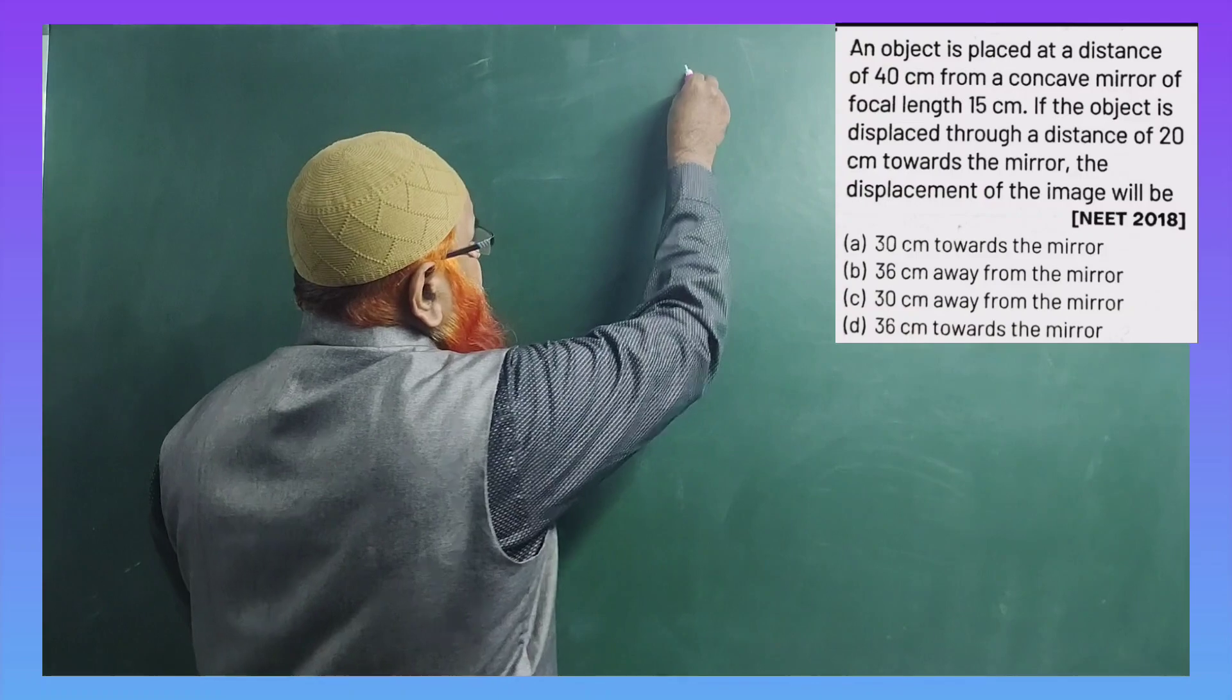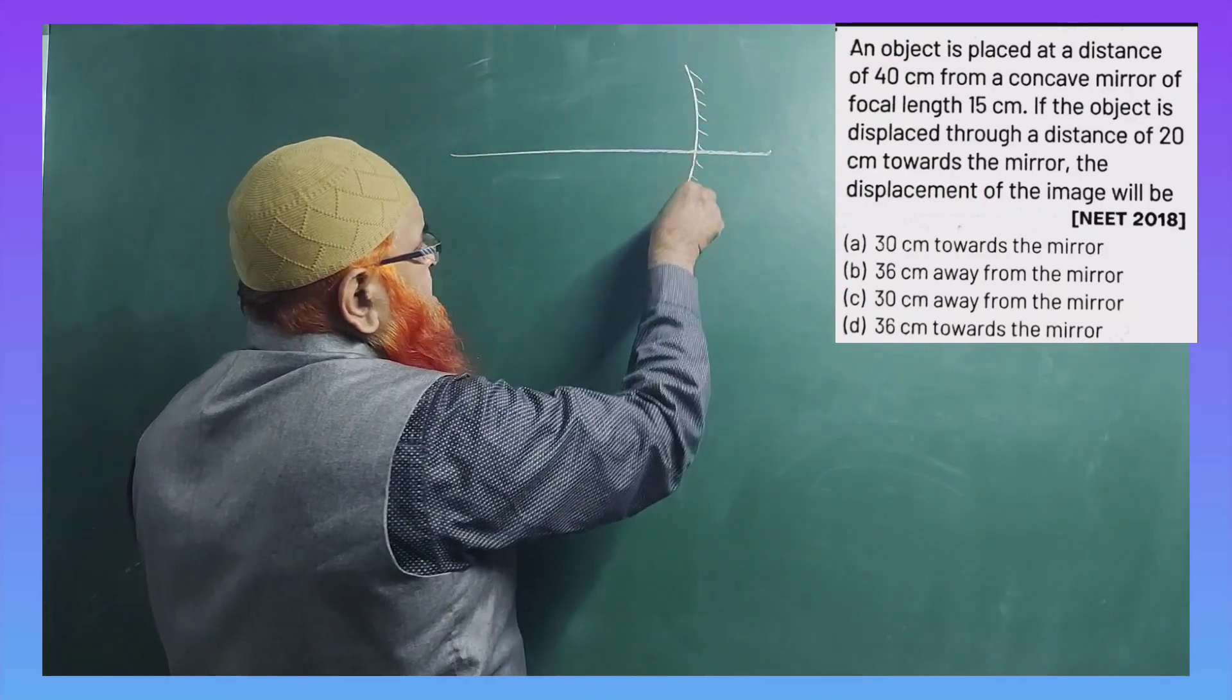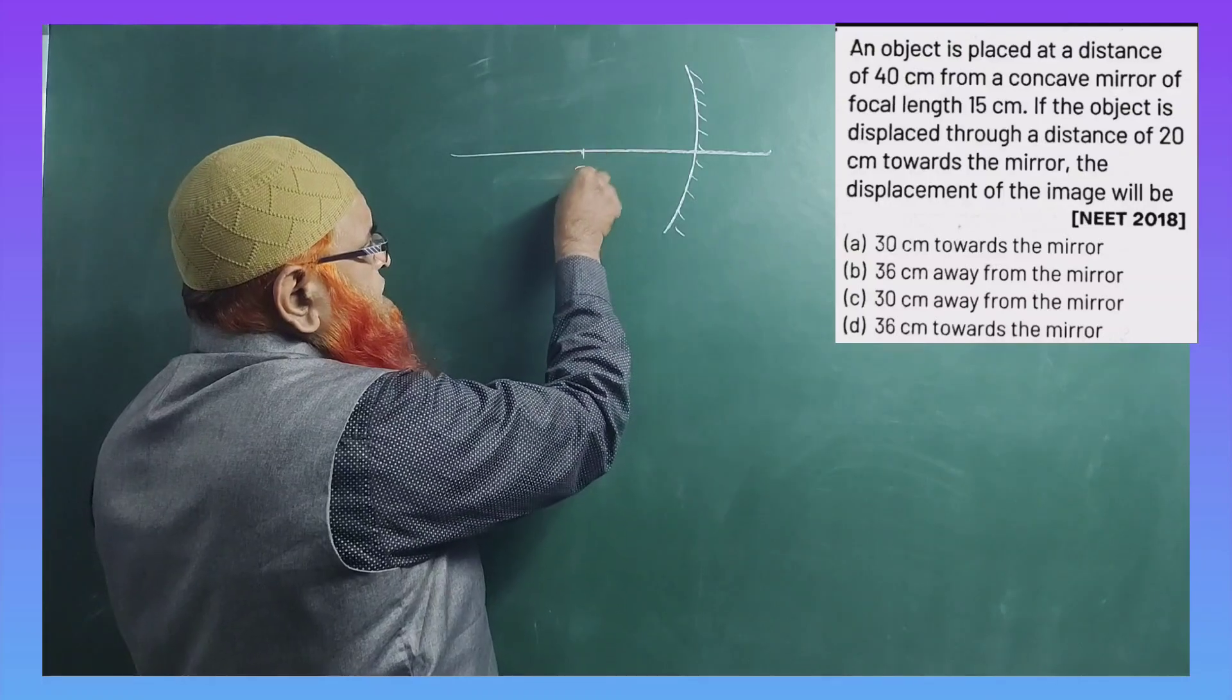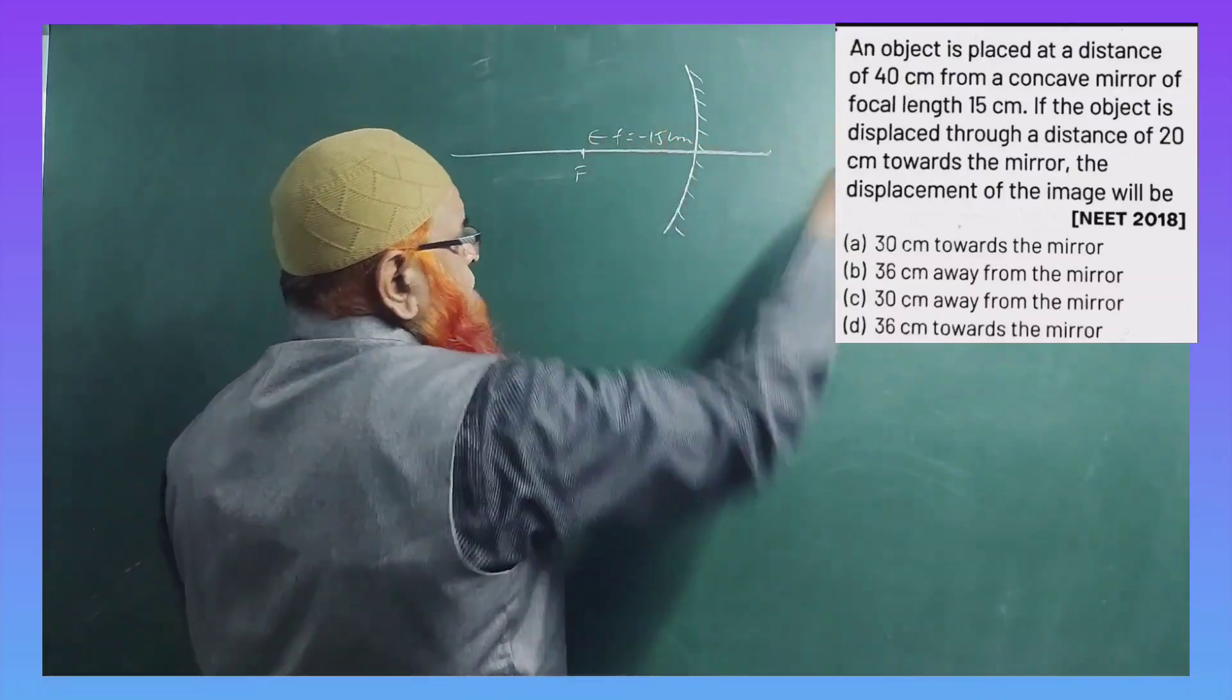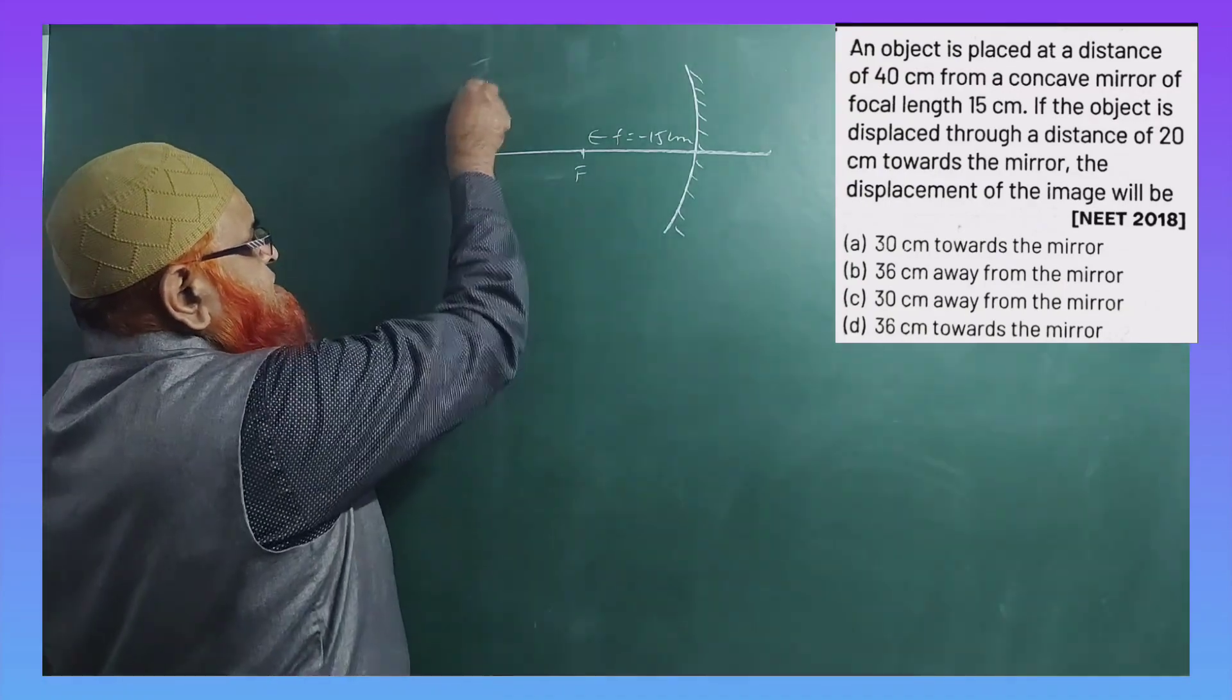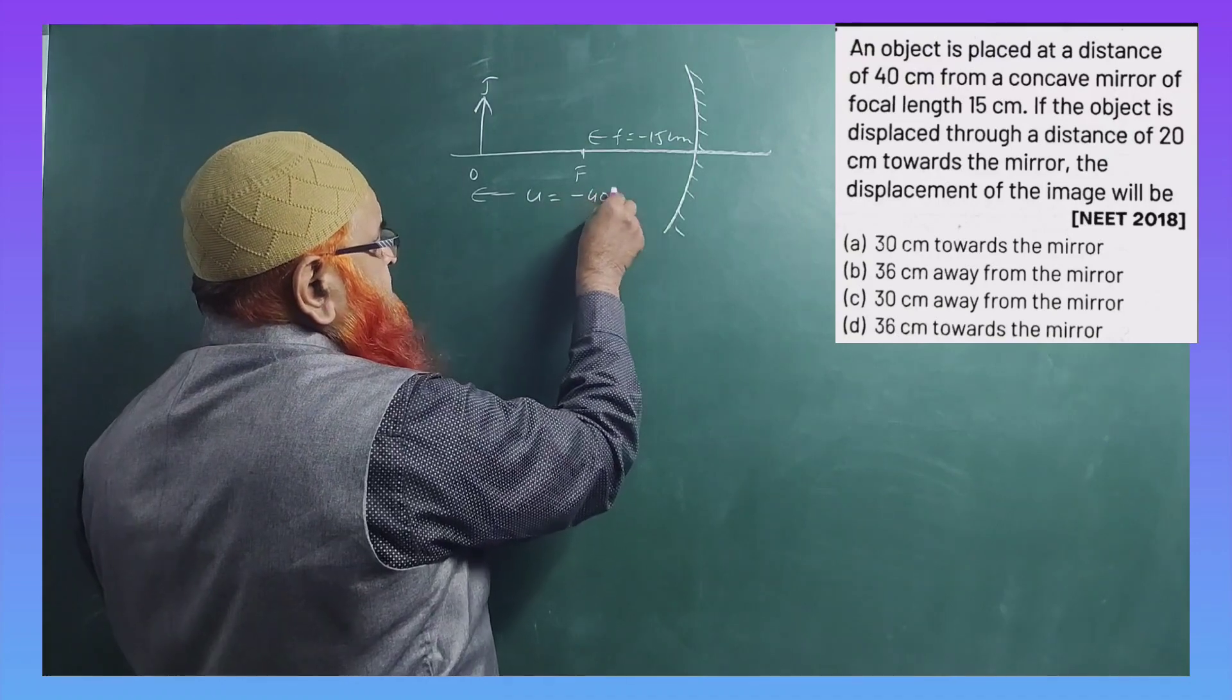According to the problem given here, a concave mirror is considered and the focal length of the concave mirror is given as minus 15 centimeters. The object is placed at a distance of minus 40 centimeters.